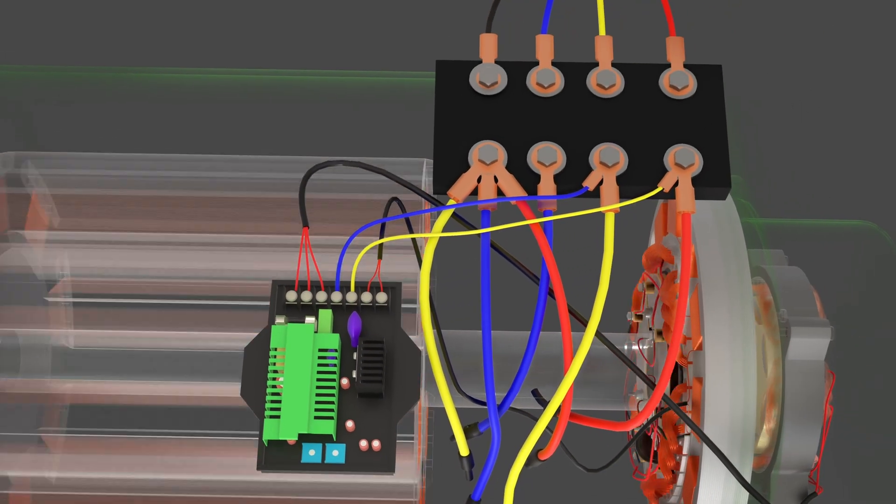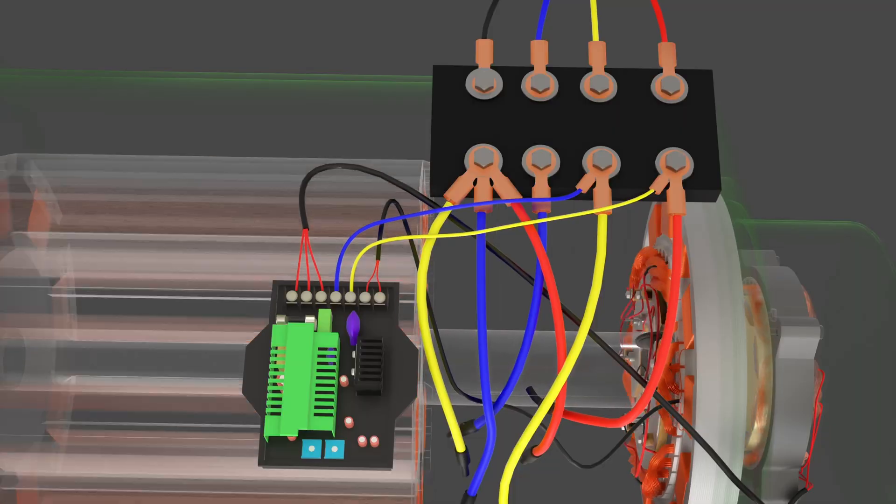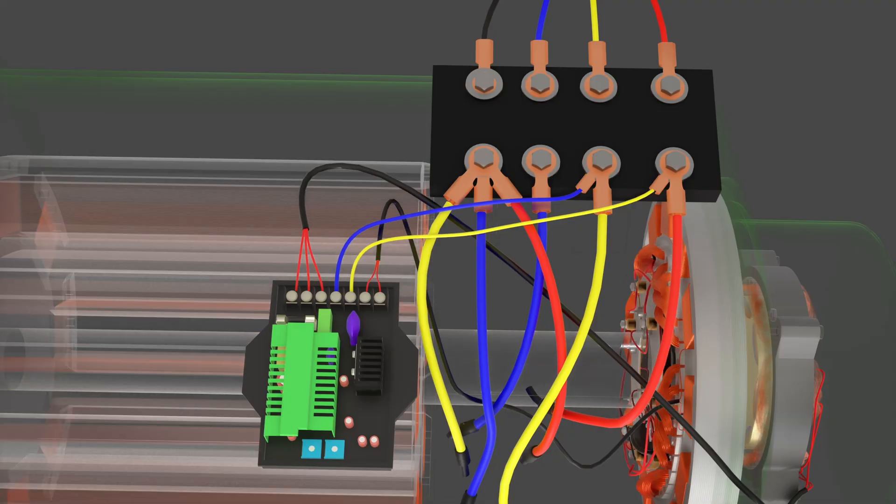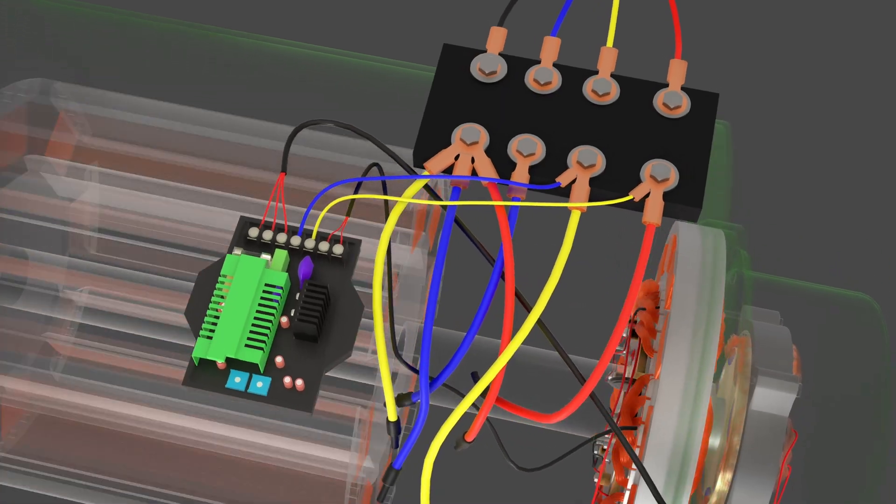When it detects a discrepancy, the AVR adjusts the exciter field current by increasing or decreasing current flow to the exciter stator. This adjustment results in either higher or lower voltage at the main stator terminals, bringing the output back to the desired level.